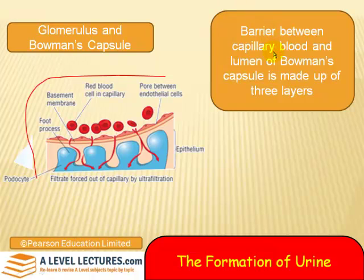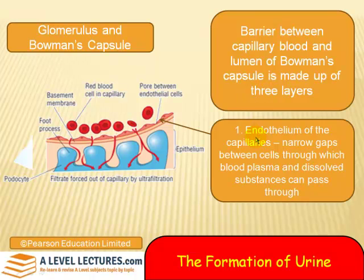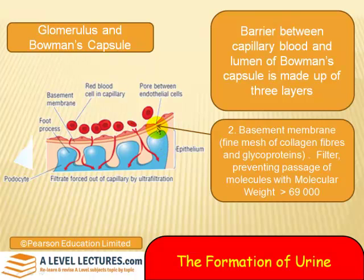The barrier between the capillary blood and the lumen of Bowman's capsule is made up of three distinct layers. The first layer is the endothelium of the capillaries, which has narrow gaps between cells through which blood plasma and dissolved substances can pass. Then you've got the basement membrane — a fine mesh of collagen fibres and glycoproteins — which is a filter for what passes from the glomerulus into Bowman's capsule.